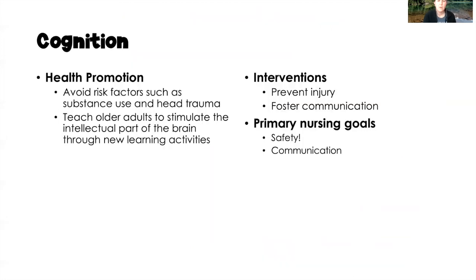To promote cognitive health, the main focus is avoiding risk factors such as substance use and head trauma. We also want to teach older adults to continue stimulating the intellectual part of their brain through new learning activities, even after retirement. For clients who are already cognitively impaired, the primary nursing goals are preventing injury, fostering communication, and ensuring safety.